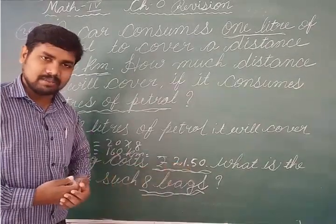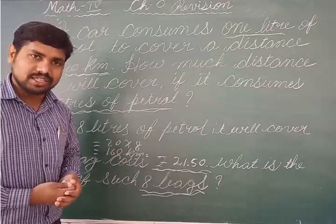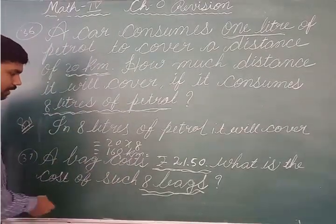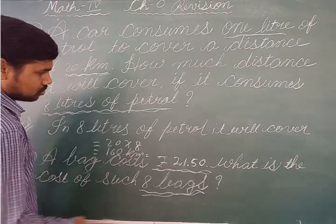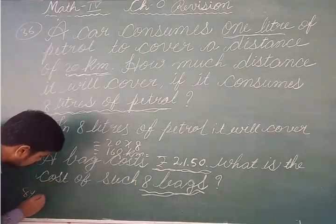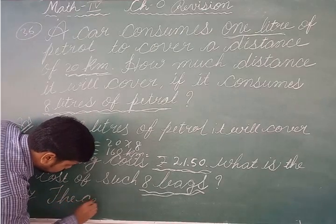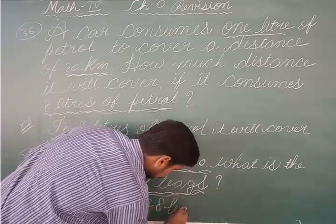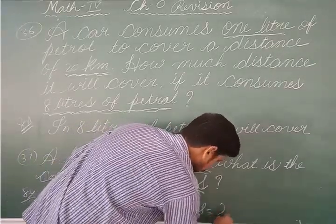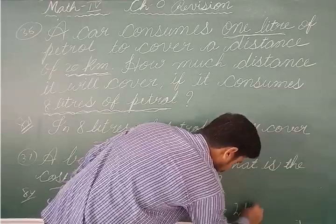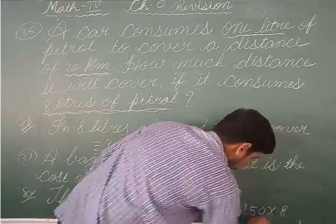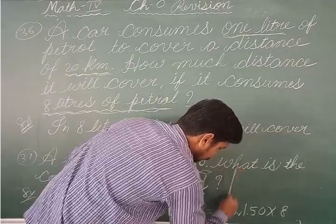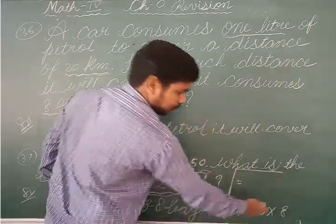Here, the multiplication involves a decimal. We will do normal multiplication, but after getting the result, we will place the decimal before the last two digits. Let's do the multiplication: cost of eight bags is equal to rupees 21.50 multiplied by 8. The digits to multiply: 8 times 0 is 0.